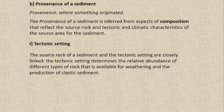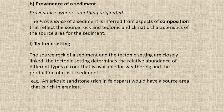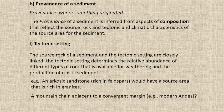Weathering leads to erosion, and then the sediment flows from upstream to downstream. For example, if we have arkosic sandstone — arkosic sandstone has greater than 25 percent feldspar — we say the source area of that arkosic sandstone enriched in feldspar is granite. So this granite source will transport its material to the depositional site and then we have the deposition or production of arkosic sandstone.